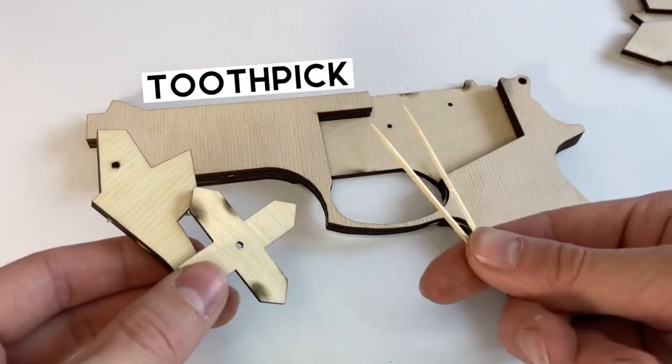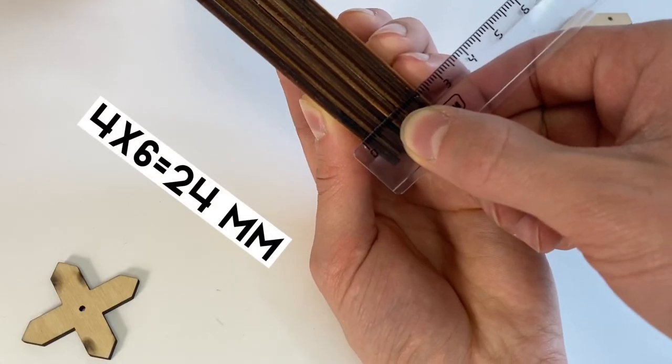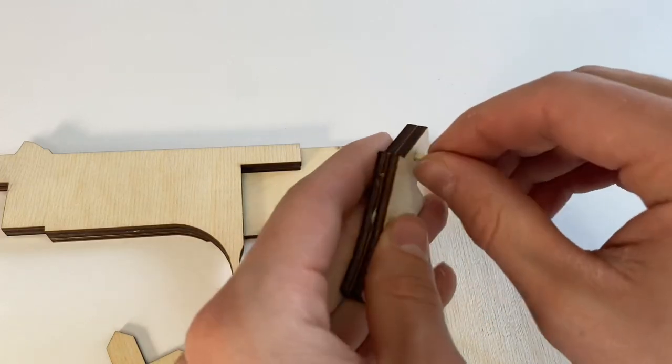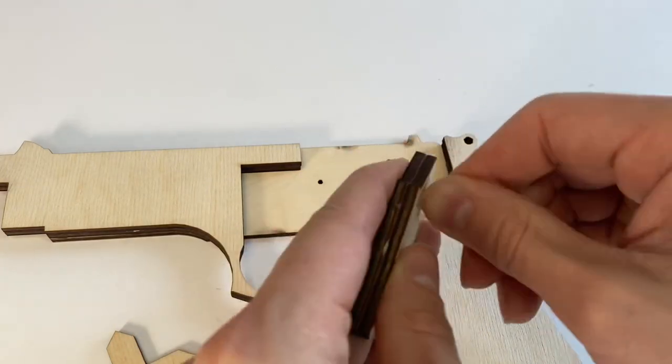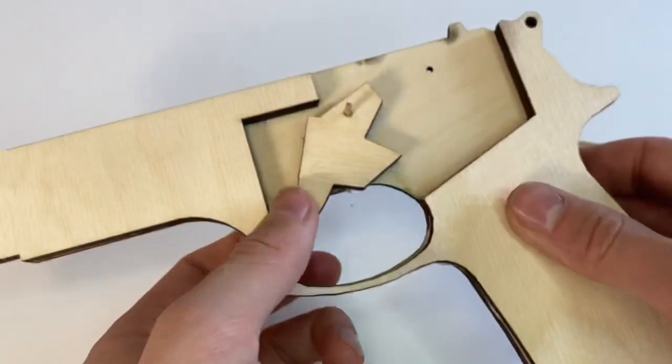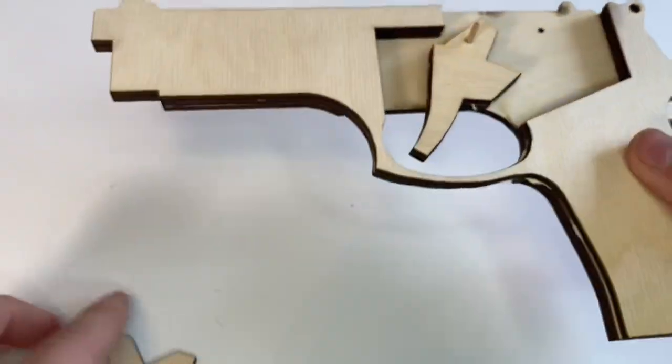We take two toothpicks to fix the mechanism. If one layer of plywood is 4 mm, then all six layers will be 24 mm. So the length of the toothpicks will be 24 mm.